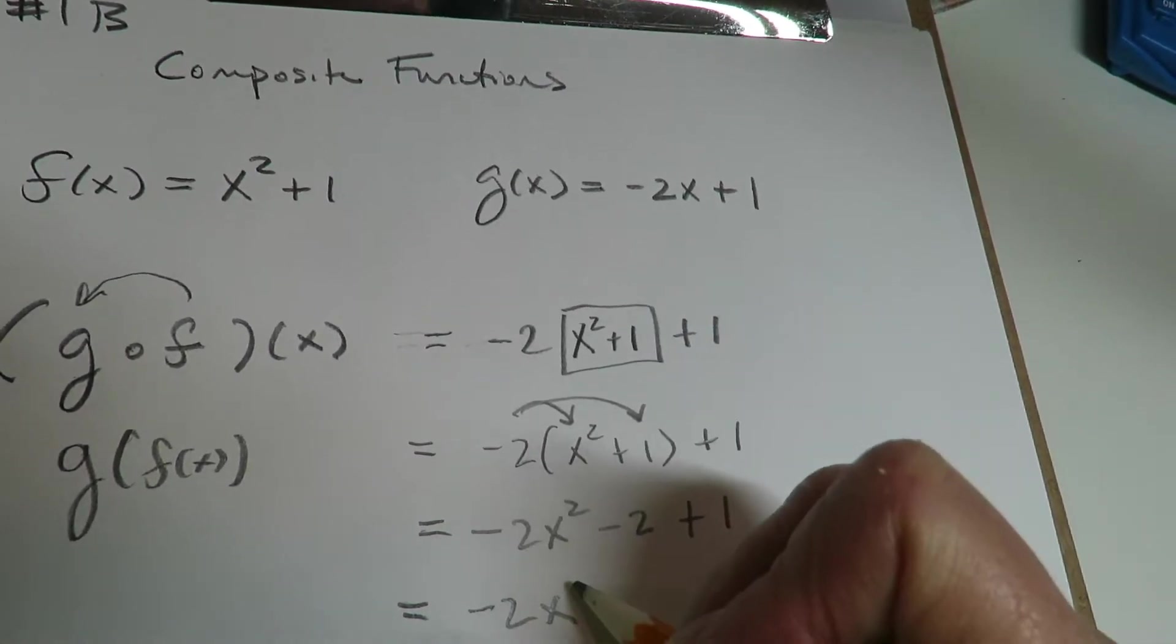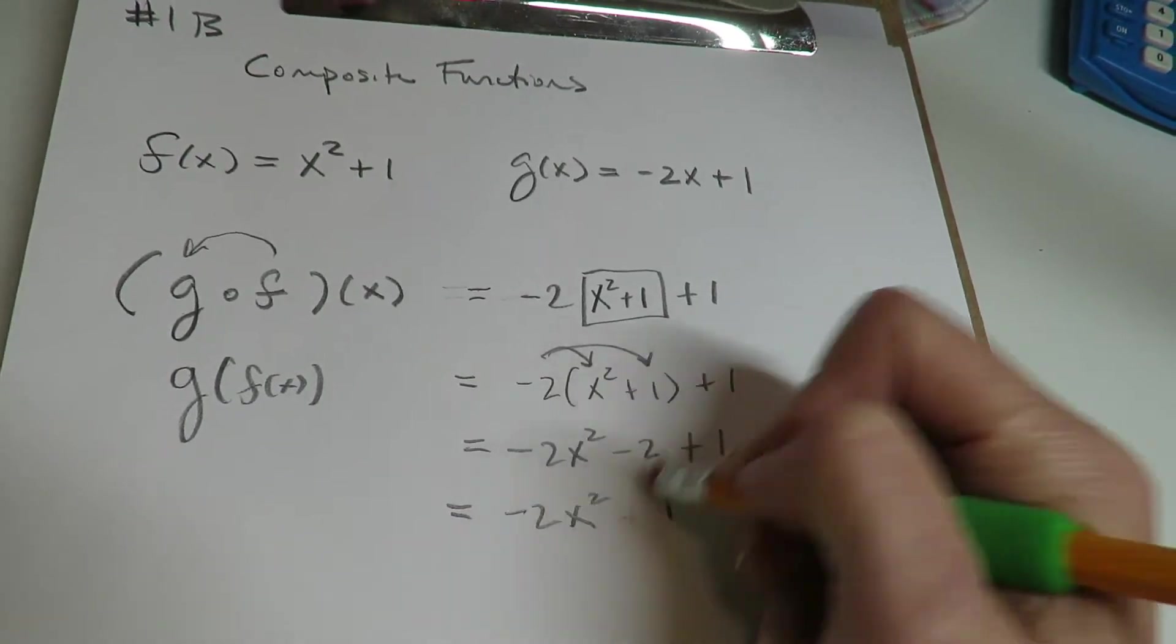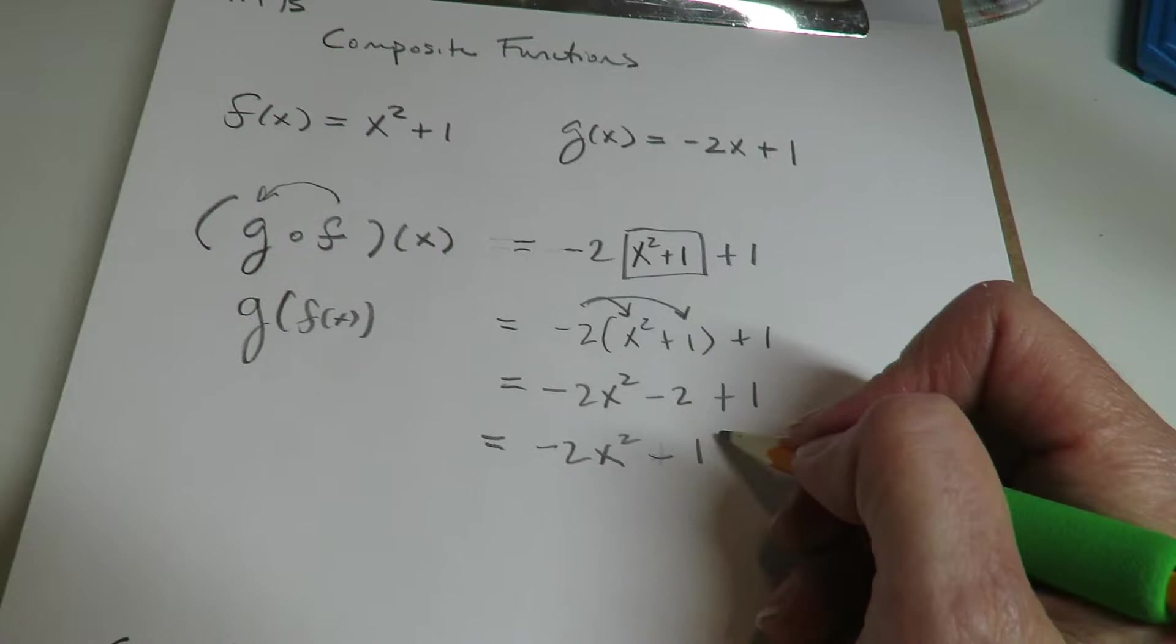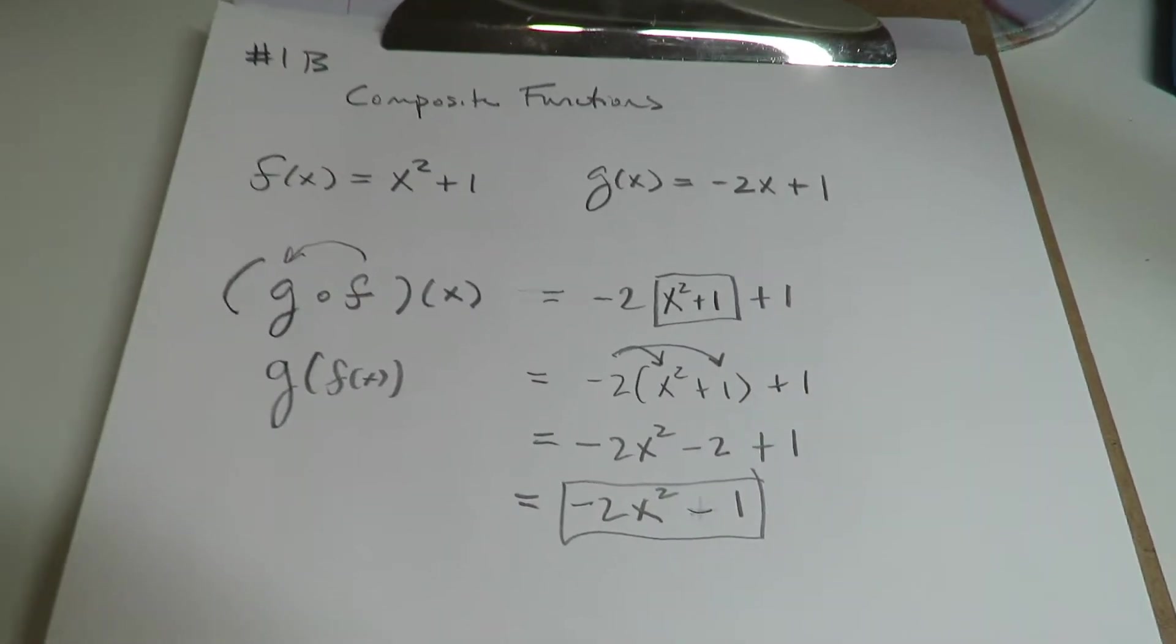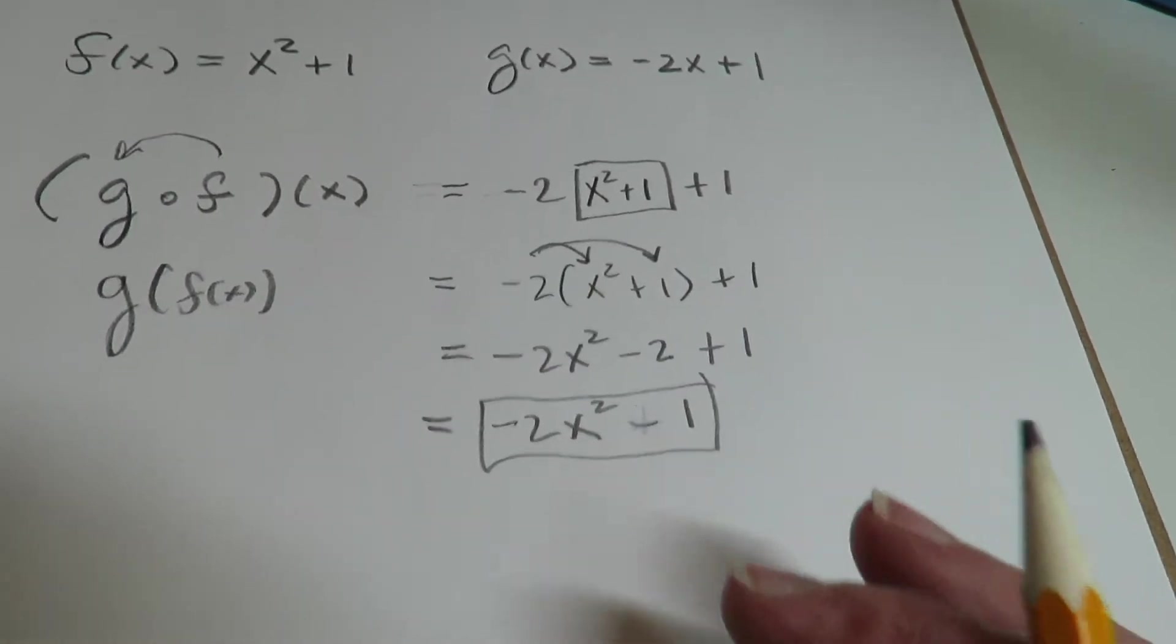If I combine like terms, oh, negative 2, negative 1. Okay, and if I combine like terms, we get that. So that would be G composite F. That's the final answer for just the general composite.